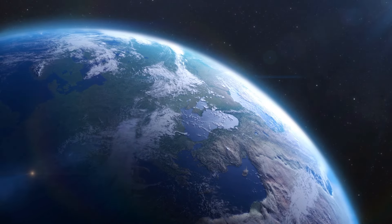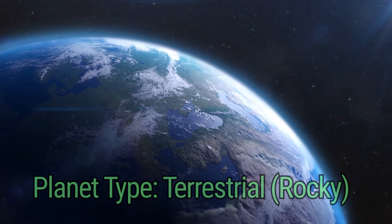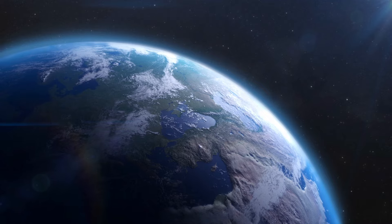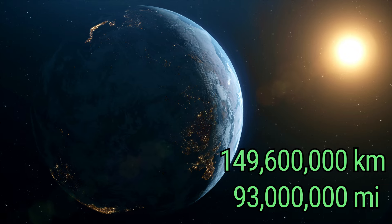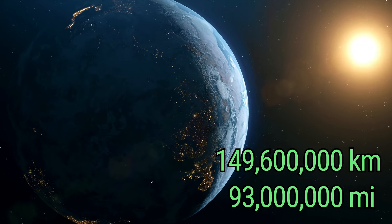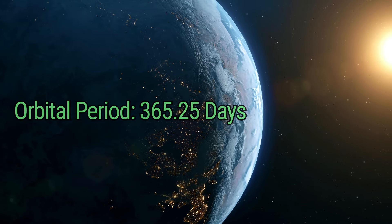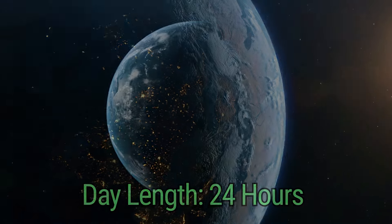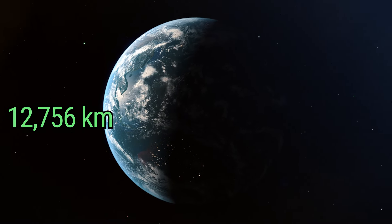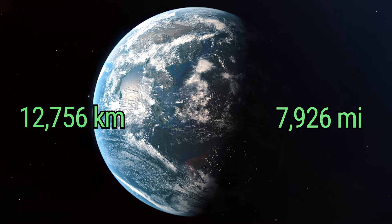Our planet is also a terrestrial, or rocky-type planet, and it orbits the sun at an average and comfortable distance of 149.6 million kilometers, or 93 million miles, with a year spanning 365.25 days and a day lasting 24 hours. Earth's diameter measures 12,756 kilometers, or 7,926 miles across.